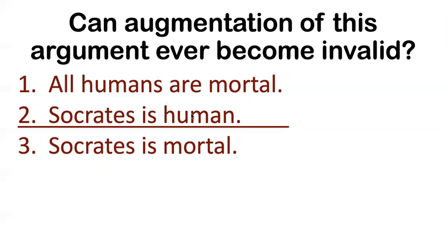Here's one other way to think about it. Sometimes you might think: what if I add the opposite of my conclusion? Like the best way to maybe make this invalid is to say: all humans are mortal, Socrates is human, and Socrates is not mortal — Socrates is immortal. What if I added that as a new premise? Well, that still doesn't make the argument invalid, because now I have contradictory premises. If these two premises entail that the conclusion is true, adding the negation of the conclusion as another premise doesn't undo that fact — it just means I'm now going to have a bunch of premises which contradict each other.